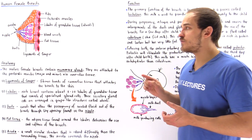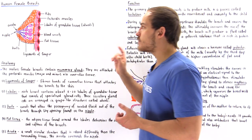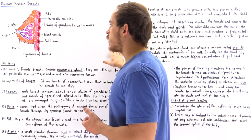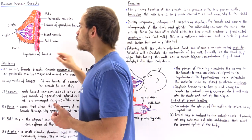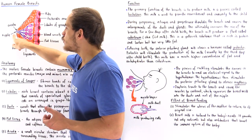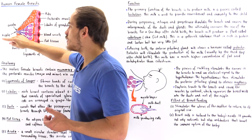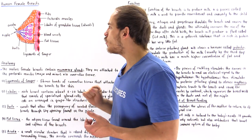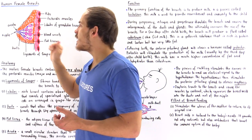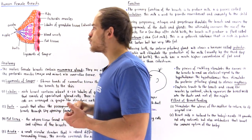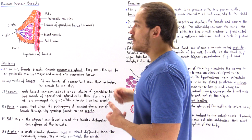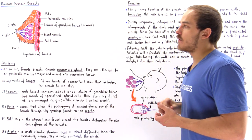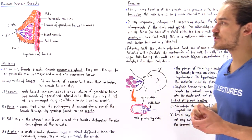The ducts allow the movement of the milk from the lobules of glandular tissue to the nipple, where the nipple has very tiny holes that allow the passageway of the milk out of the breast.